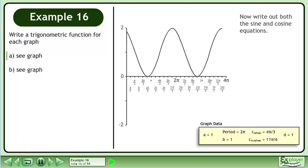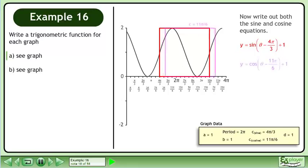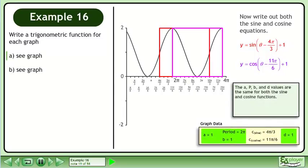Now write out both the sine and cosine equations. The sine function is y equals sine of (theta minus 4pi over 3) plus 1. The cosine function is y equals cos of (theta minus 11pi over 6) plus 1. The a, p, b, and d values are the same for both the sine and cosine functions.